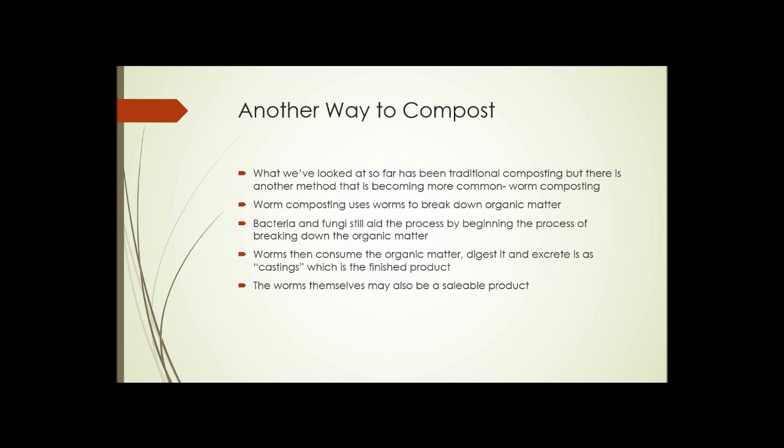So when you add organic matter to a worm composting unit, fungi and bacteria start operating on it first. It breaks it down a little bit, and then the worms start chewing through it. The worms then consume that organic matter, digest it, and excrete it as something called worm castings, which is the finished product of worm composting.